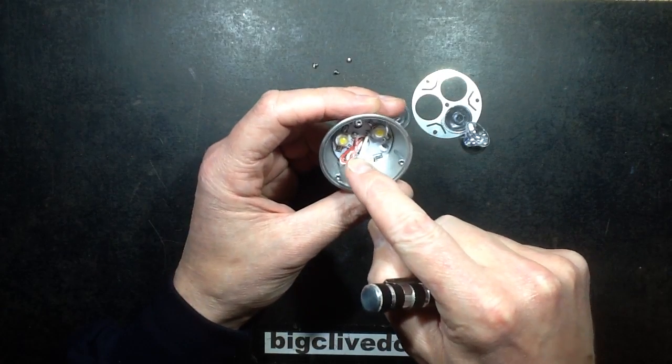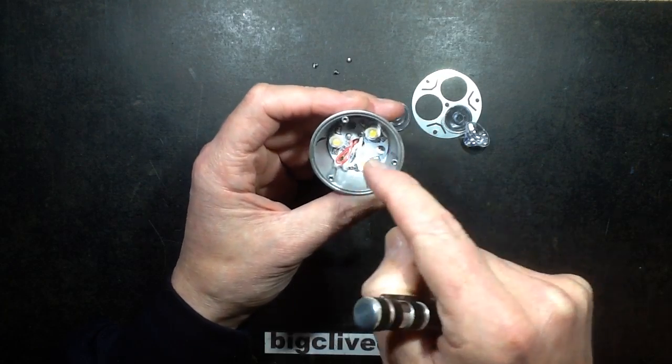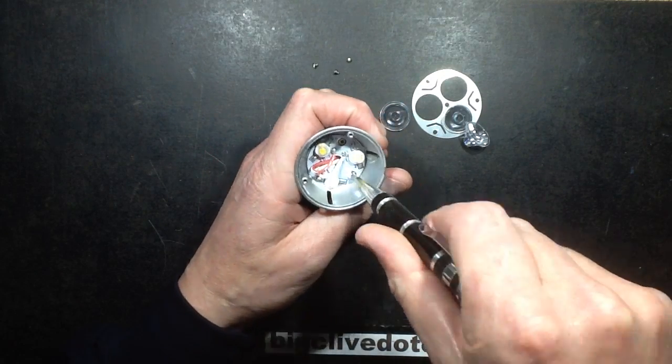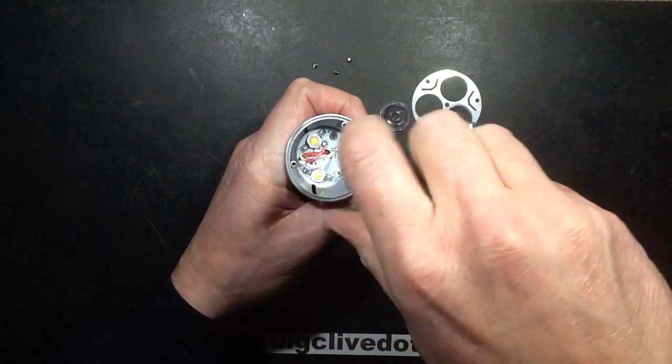So first thing to note is the wires are sticking right through. They've not bothered shoving them down, which is no great deal. I suppose it doesn't really matter that much. Oh, heat sink compound is everywhere, notably just at one side.